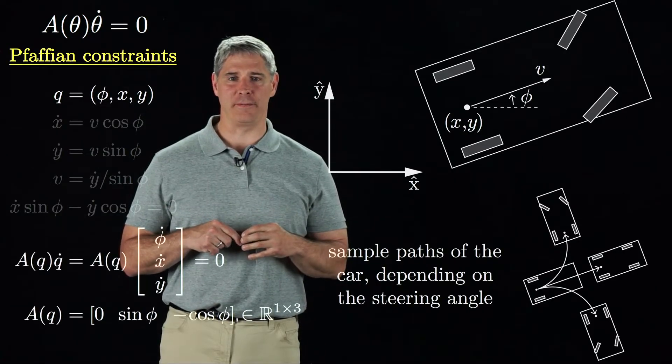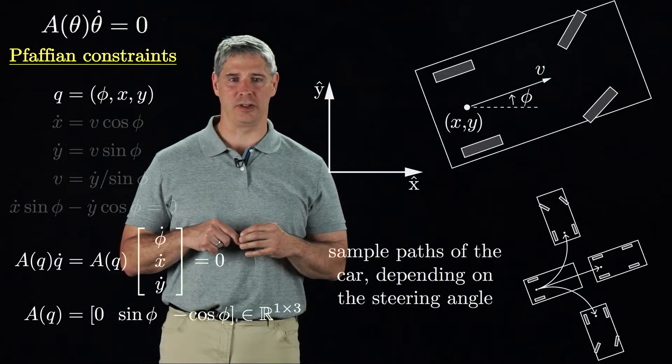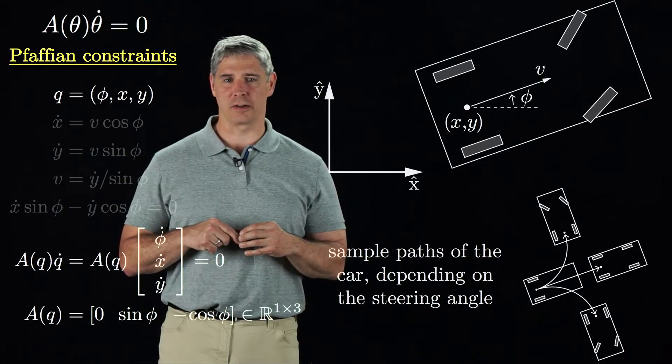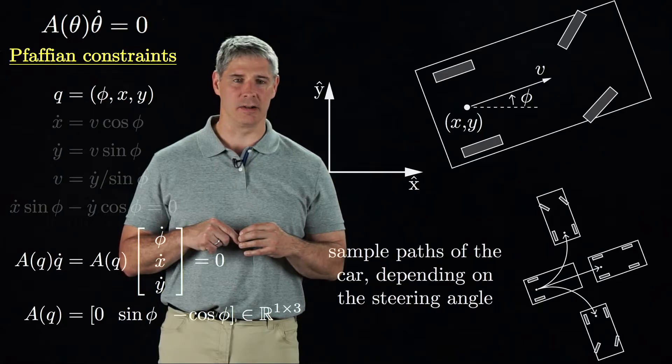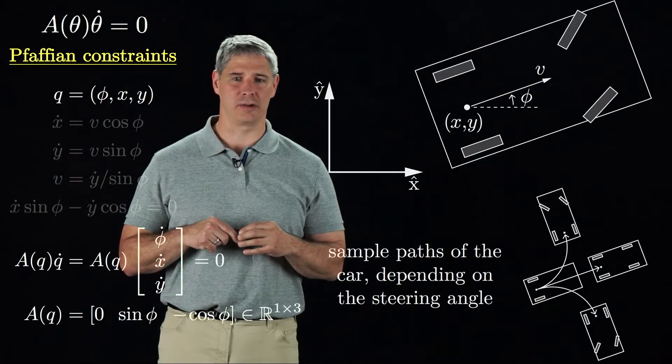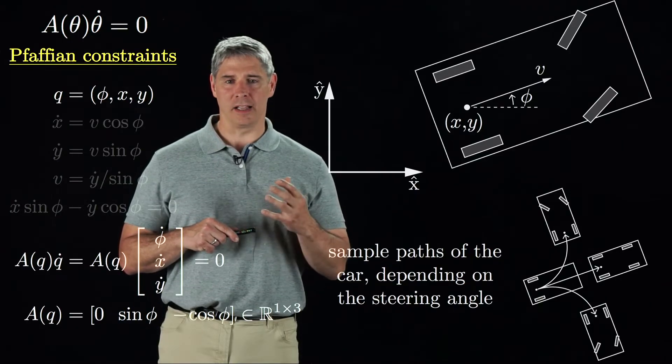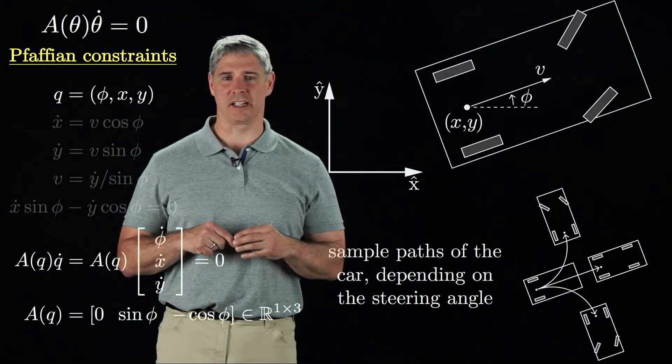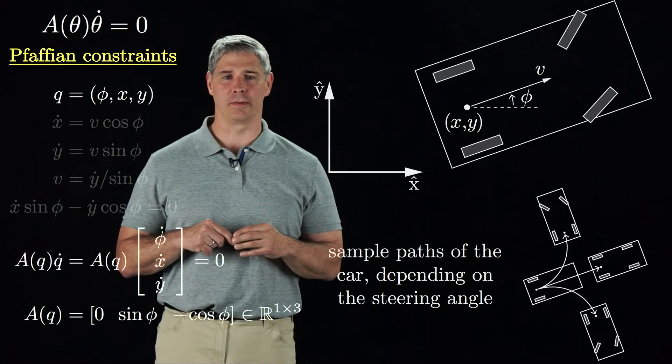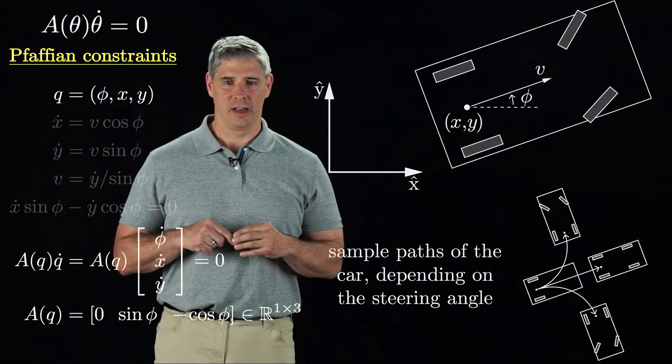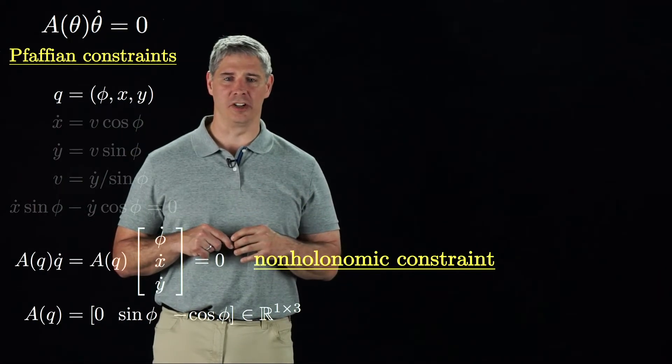We can write this as a Pfaffian constraint A of q times q dot equals zero, where the single row of the one by three A matrix is zero, sine of phi, and minus cosine of phi. Unlike a holonomic constraint, this velocity constraint cannot be integrated to give an equivalent configuration constraint. Therefore we call this a non-holonomic constraint.